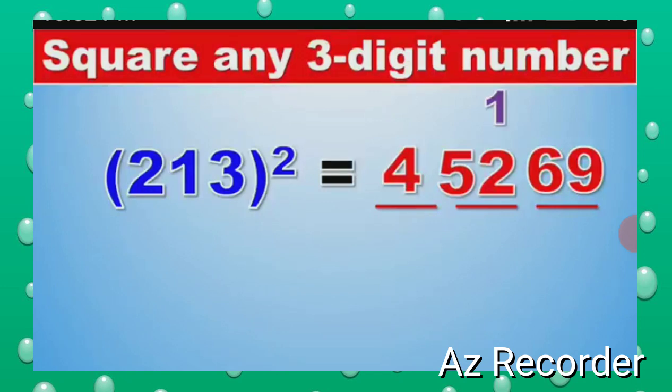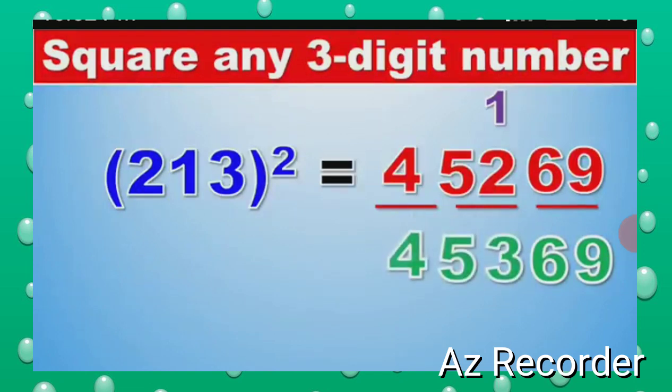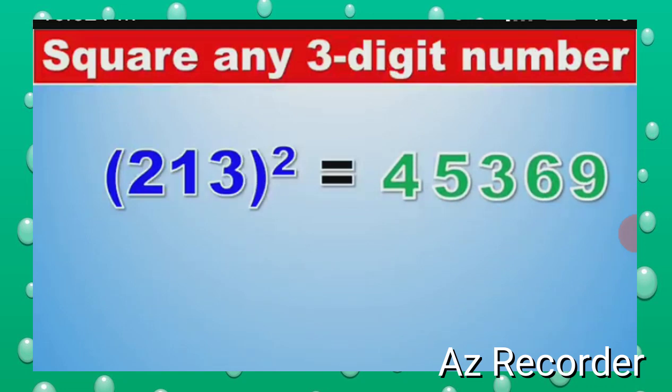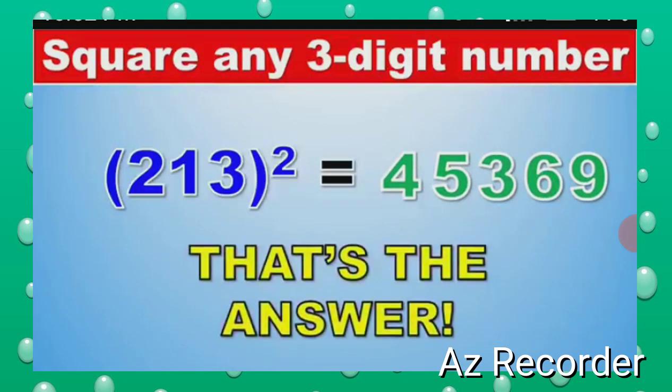So we have to add the 1 from there to the 52 here. Therefore, 52 plus 1 is 53. And now we have our answer: 213 squared is 45,369.